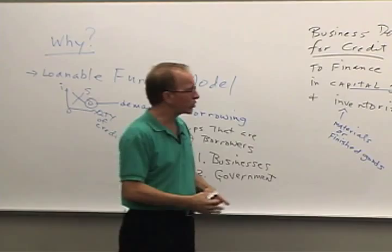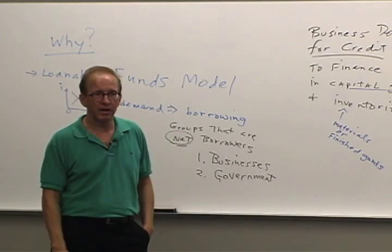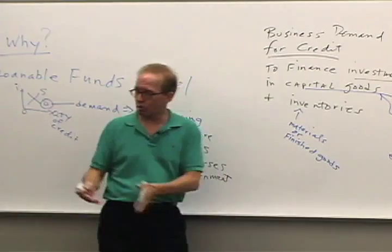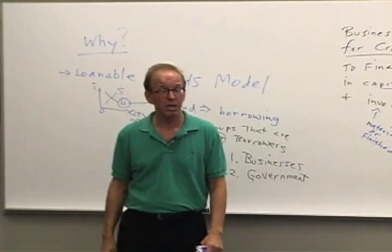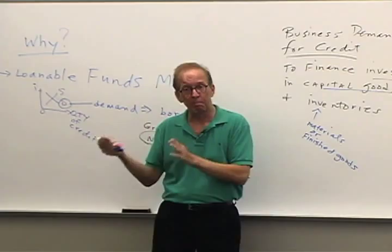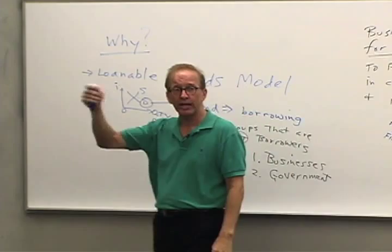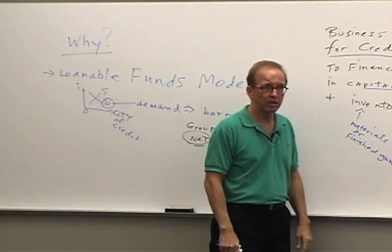Most car dealerships borrow money to finance the cars sitting on their showroom floor or out in the lot. A lot of drug stores, grocery stores, and clothing stores borrow money to buy inventory, put it on display, and then use the sales receipts to pay off the bank loan. City Utilities buys coal — a train comes in with a hundred cars of coal, and now they have an inventory of coal financed by borrowing.